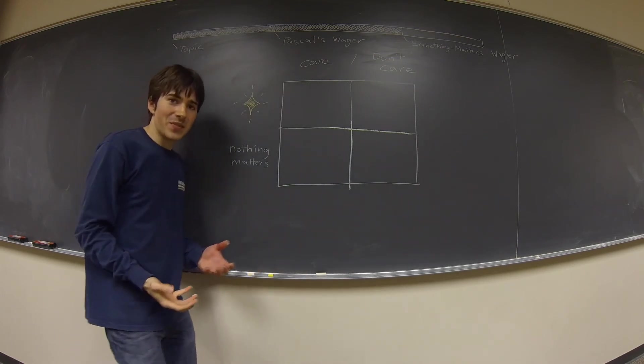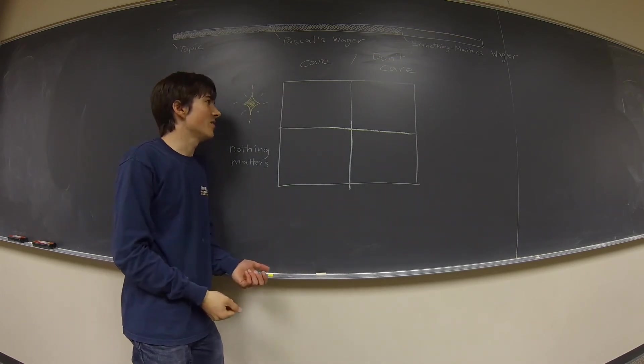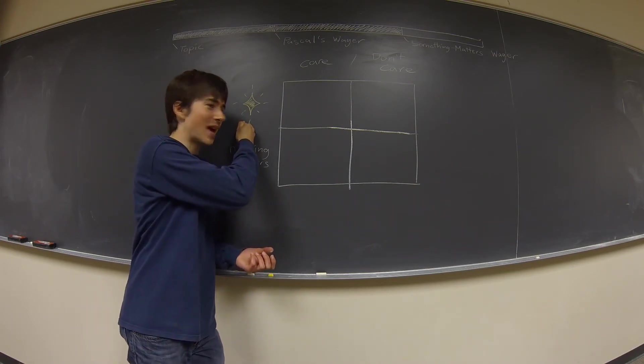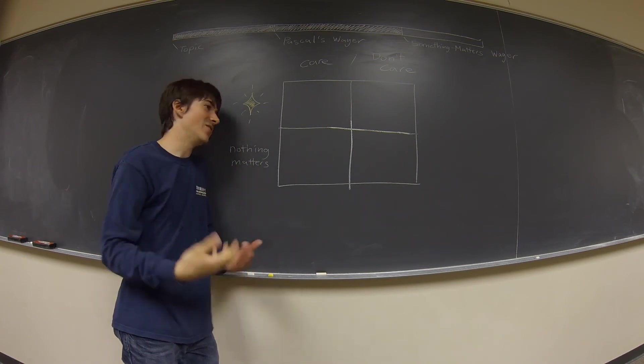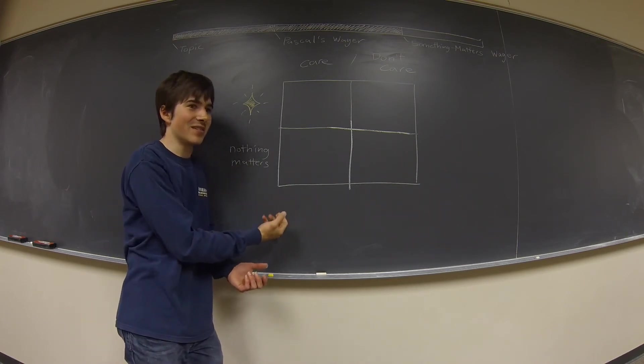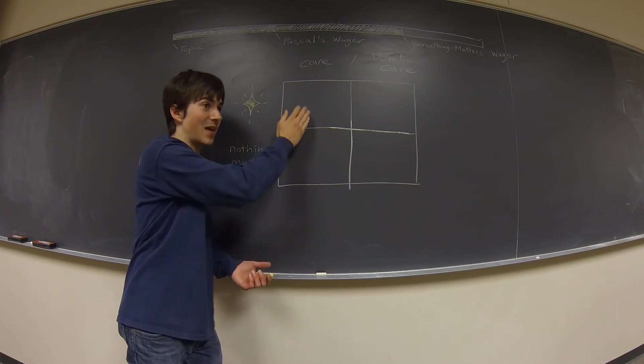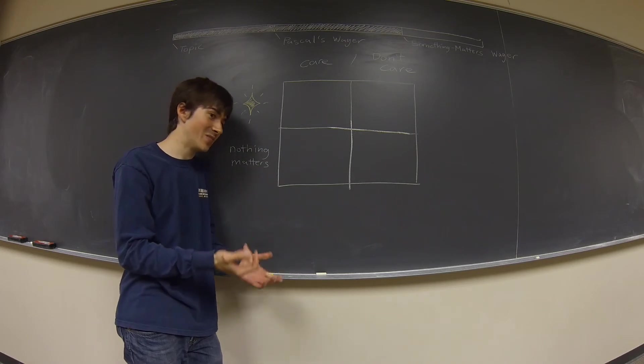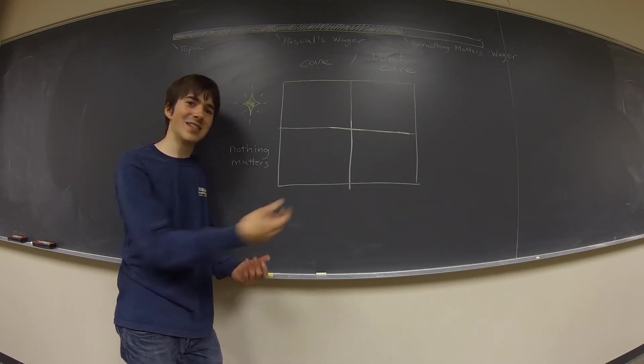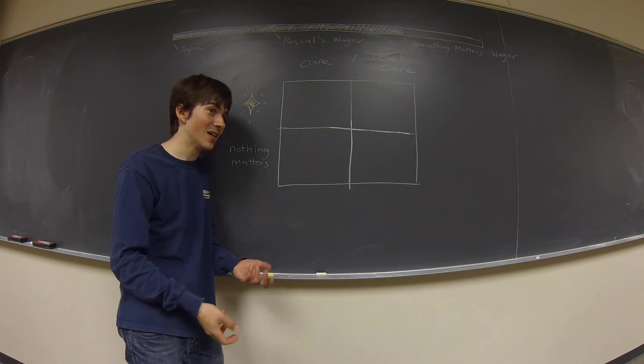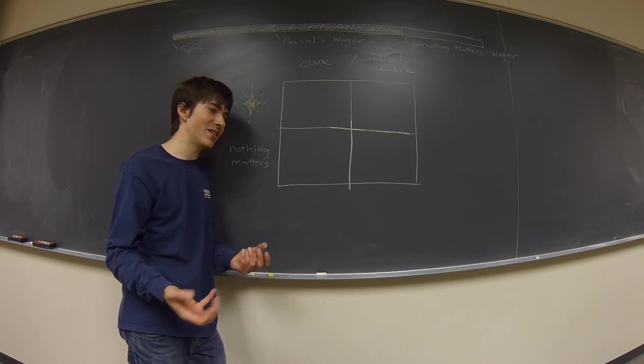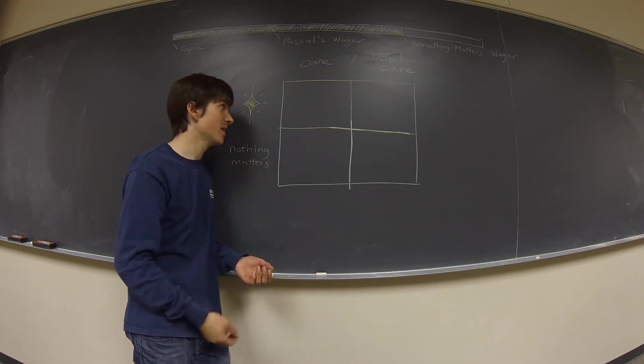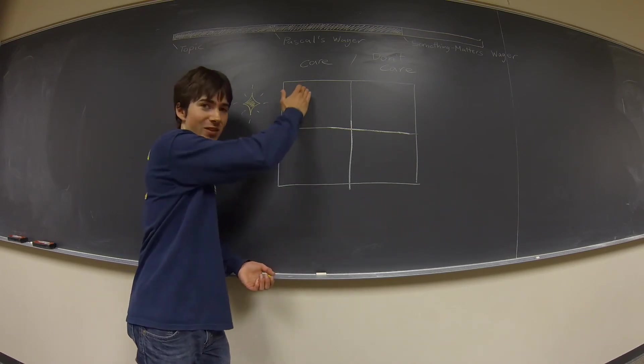Okay. So then we can do the same thing. We can draw the grid. We can say there's two possibilities. Something matters or nothing matters. You can guess where we're going with this. You have two options. You can live as if something matters. You can care, which would involve trying to figure out what it is that matters. Is it people? Is it dolphins? Is it potatoes? This is a different discussion. You have to try to figure that out. And then once you've got a good idea of that, you have to go and try to serve that. Different discussion. But that's what this would entail. Or you don't care. You just go through life and you say nothing matters. I don't care at all. I'm going to do whatever I want.